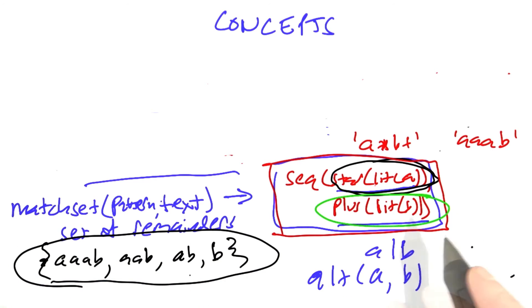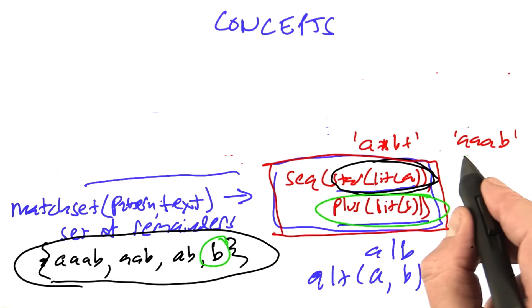We try to match y, the plus literal b, against all of these match sets, and it'll fail to match against each of these three. It will match against this one, and so now we have a match that consumes the entire string.